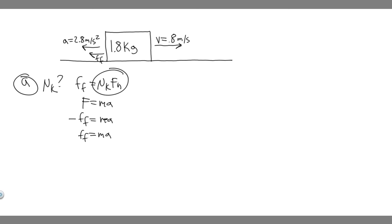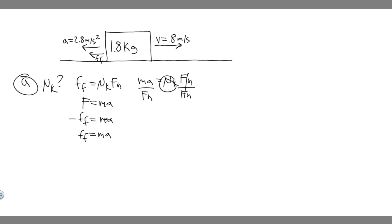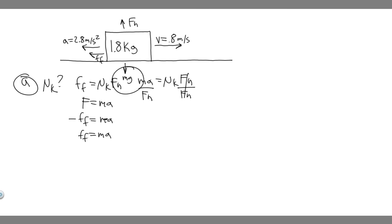The force of friction equals mu sub k times f sub n, and it also equals ma. So we can say ma equals mu sub k times f sub n. Dividing both sides by the normal force f sub n lets us solve for mu sub k. We know the mass, the acceleration, and the normal force. The normal force equals mg, because the normal force and gravity are the only two vertical forces. So the formula becomes mu sub k equals mass times acceleration divided by mg.